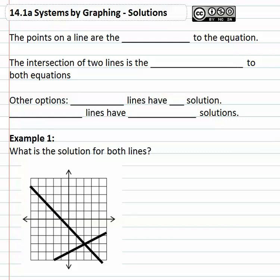We need to remember that all the points on any given line are the solutions to the equation, which means if we have two lines, the intersection of the two lines is the solution to both equations.